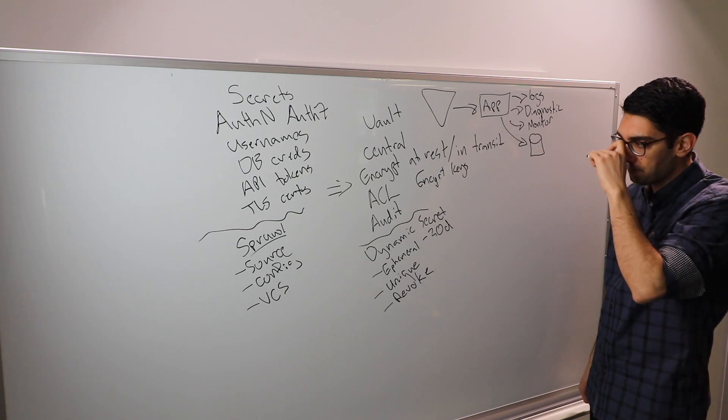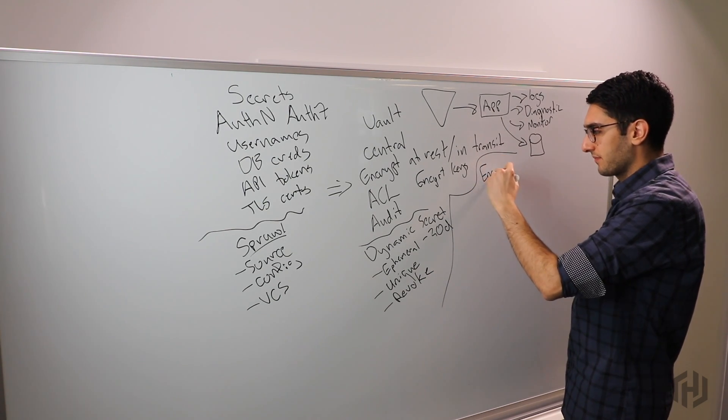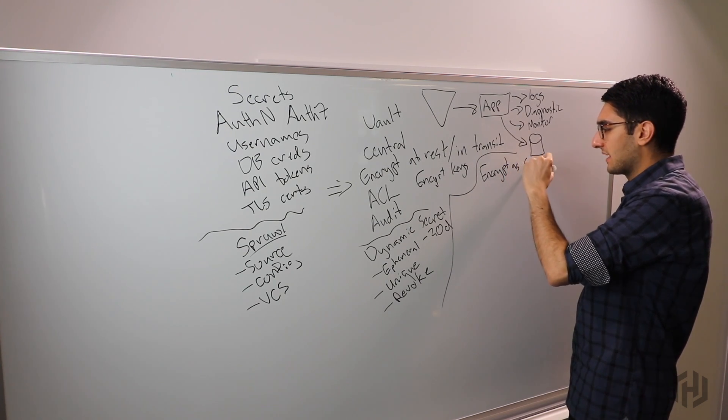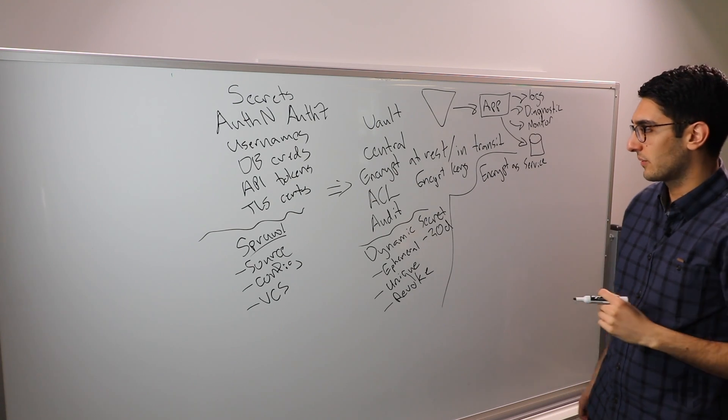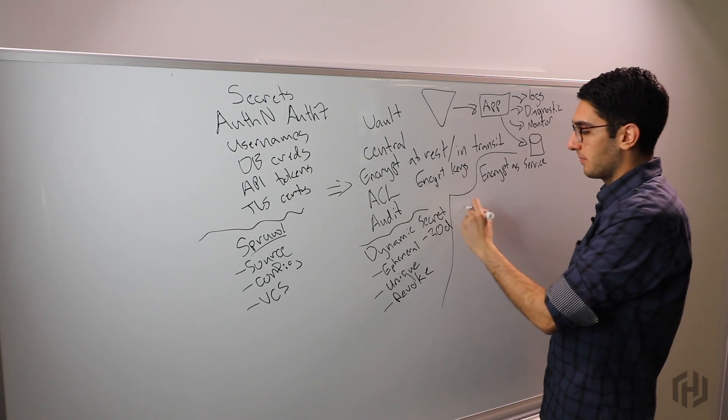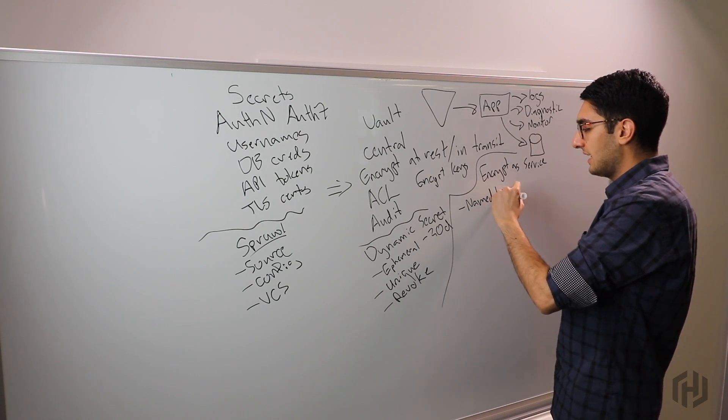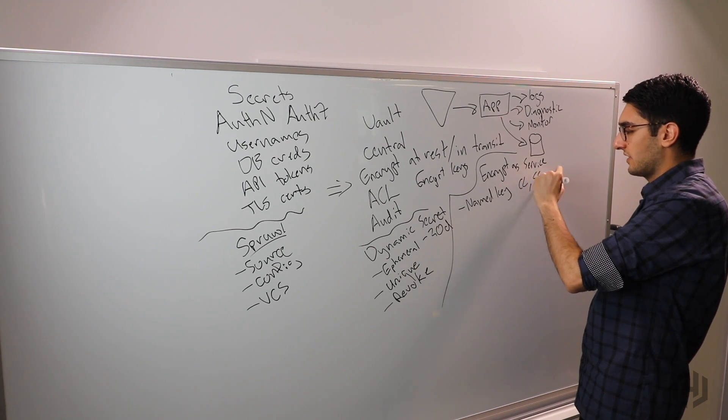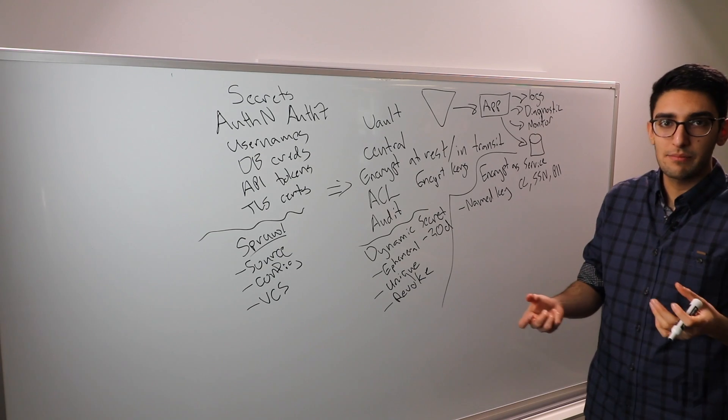This has evolved into a capability Vault calls encrypt as a service. The idea here is instead of expecting that we're just going to deliver a key to a developer and the developer will do cryptography correctly, Vault will do a few things. One, it'll let you create a set of named keys. I might create a key that I call credit card information and a separate one I call social security number and one for PII. These are just names, and I'm not going to actually give this value out.